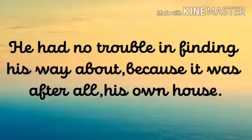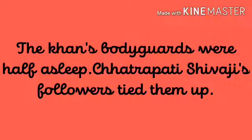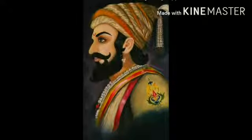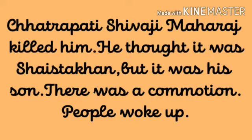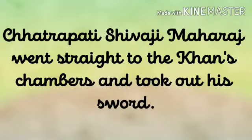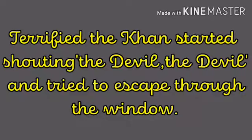Shahist Khan was fast asleep at this hour. Shivaji Maharaj made a hole in the wall and entered Lal Mahal. He had no trouble finding his way about, because it was after all his own house. The Khan's bodyguards were half asleep, and Chhatrapati Shivaji Maharaj's followers tied them up. Chhatrapati Shivaji Maharaj went deeper inside, when suddenly someone rushed at him with a sword — Chhatrapati Shivaji Maharaj killed him. He thought it was Shahist Khan, but it was his son.